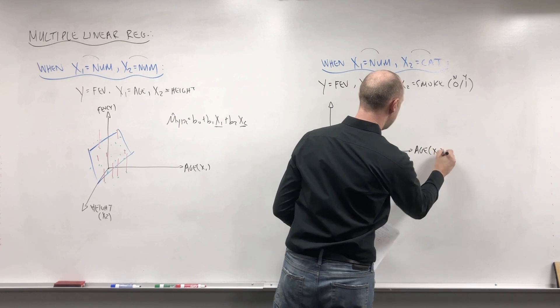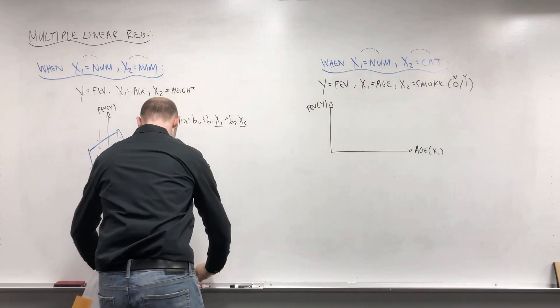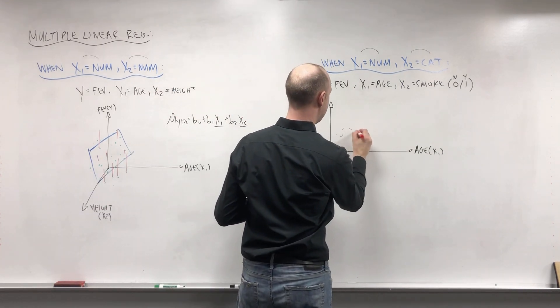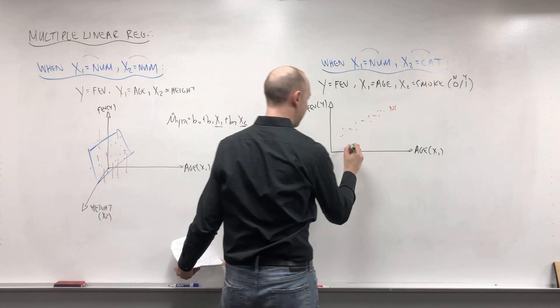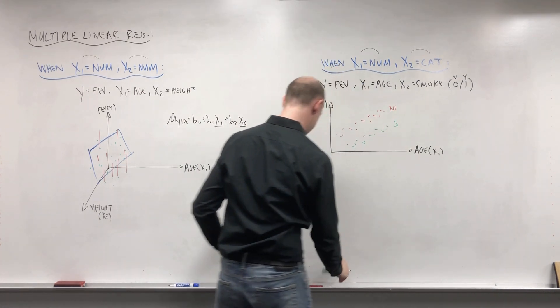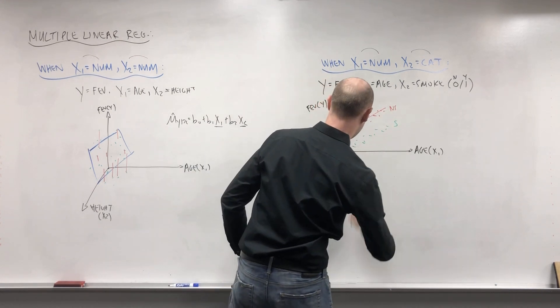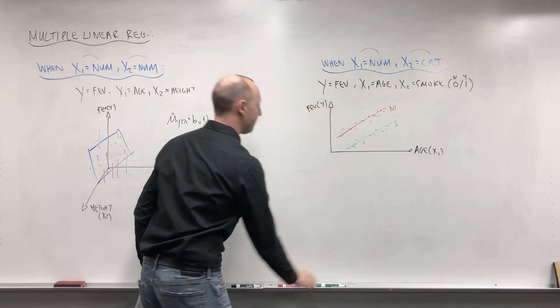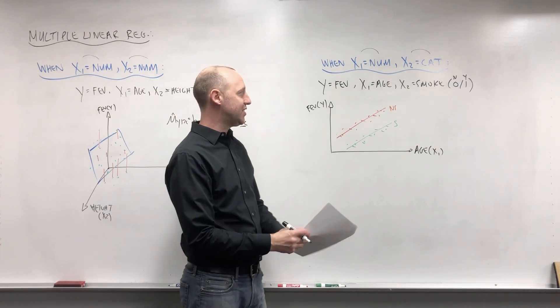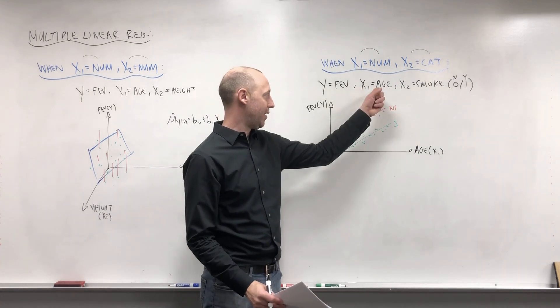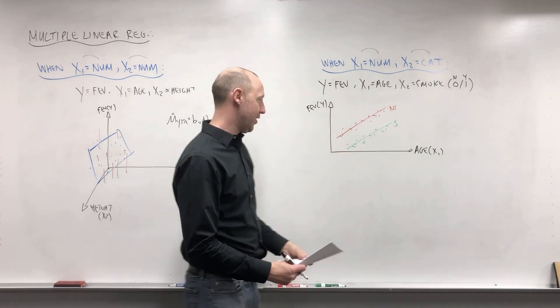So here's the age or x1, here's the FEV or the y variable, and we can think of we have data for the non-smokers and data for the smokers. And we can think of fitting two separate lines, one for the non-smokers and one for the smokers. So having a categorical variable we can think of essentially as adding more lines to the plot. In this case we're looking at age and FEV and smoke yes or no. We have a line for smokers and a line for non-smokers.